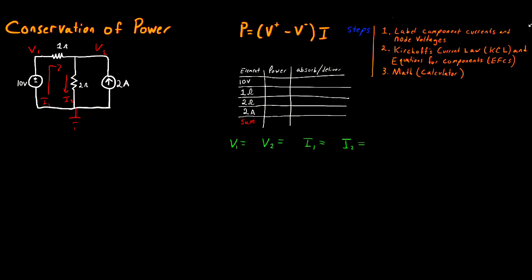At this point, we have completed step one and can move on to step two. In step two, we're going to be writing Kirchhoff's Current Law. Basically, this is just an expression that relates currents pointing towards a node — flowing into a node — to the currents that are flowing away from the node. So let's go ahead and do that.